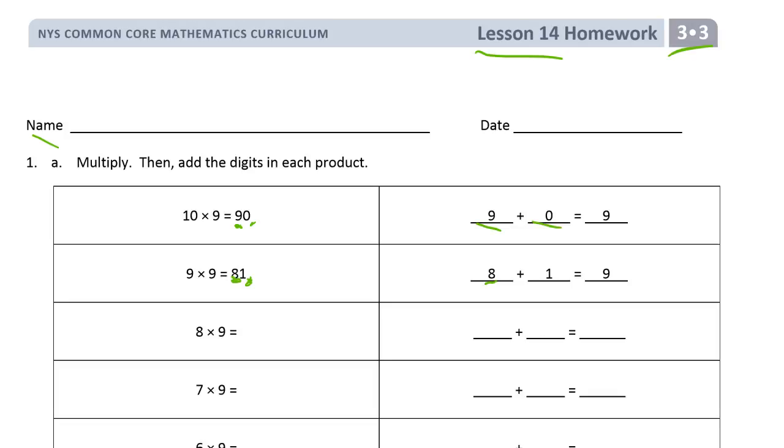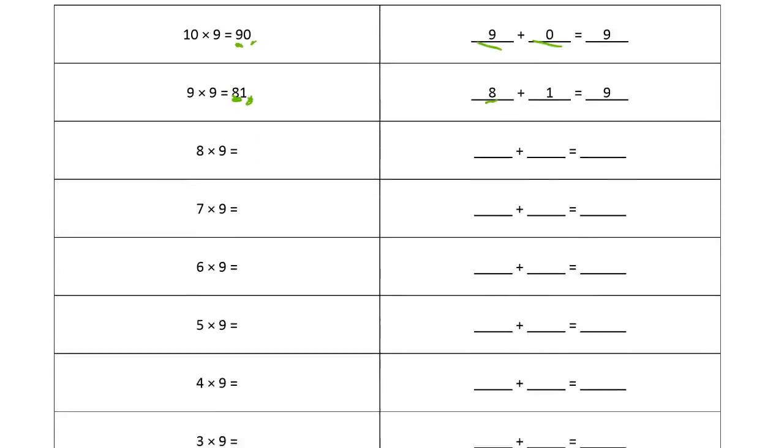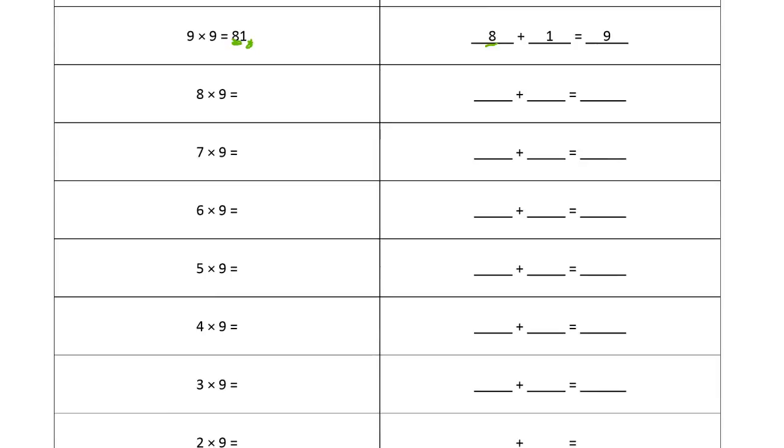That's adding the digits, and you're going to see a pattern. 8 times 9 is 72, 7 plus 2 is 9. 7 times 9 is 63, 6 plus 3 equals 9.